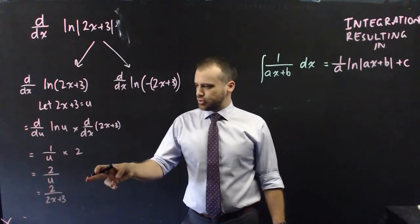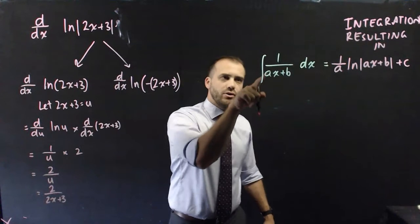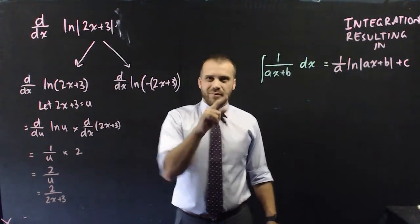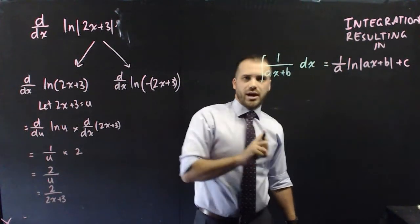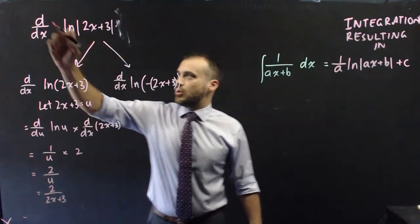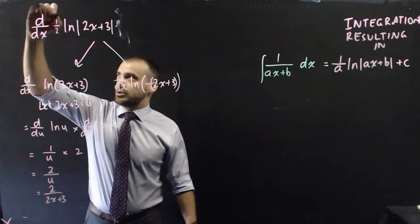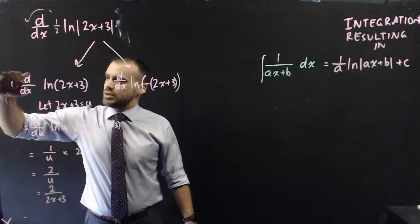Now, that should look familiar. We're pretty close to having a 1 on ax plus b. The complicating factor is this 1 on a out the front. So, if we started with 1 on 2 here and put that 1 on 2 outside of our derivative, which we can do,